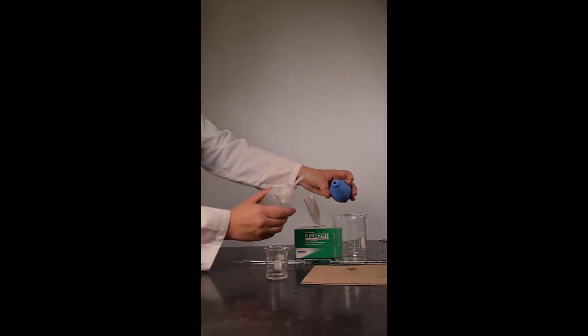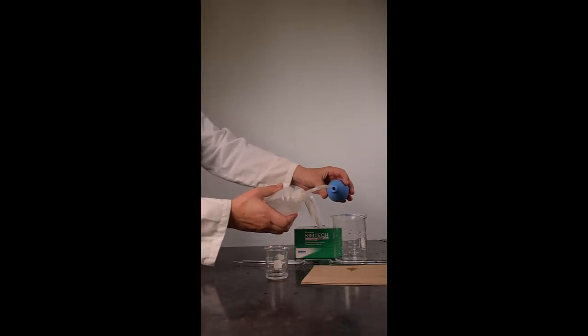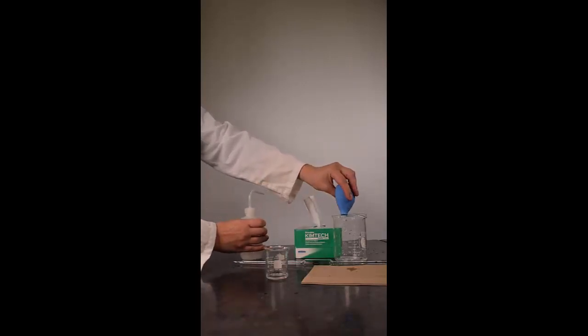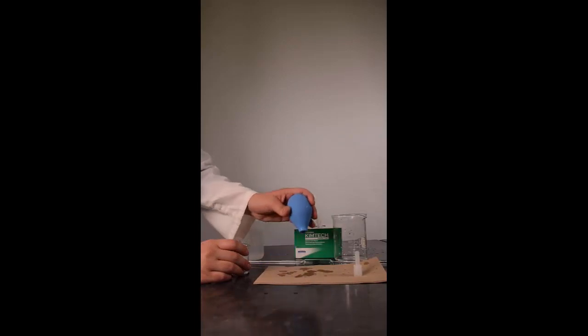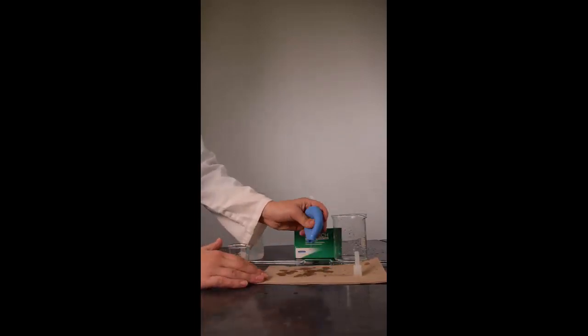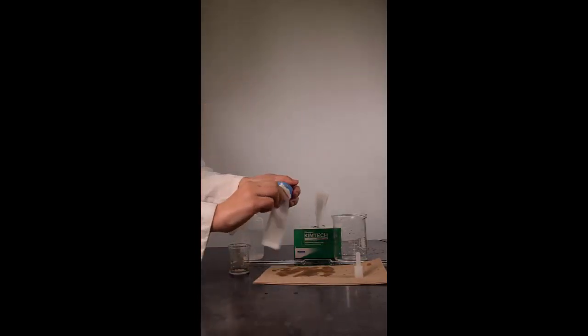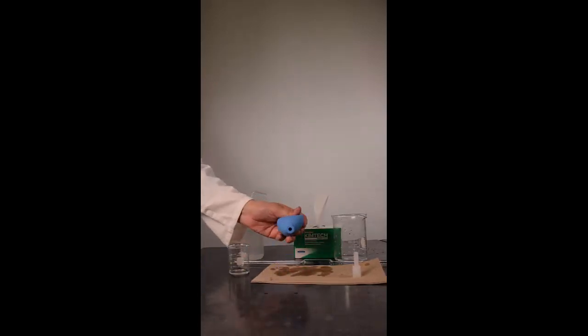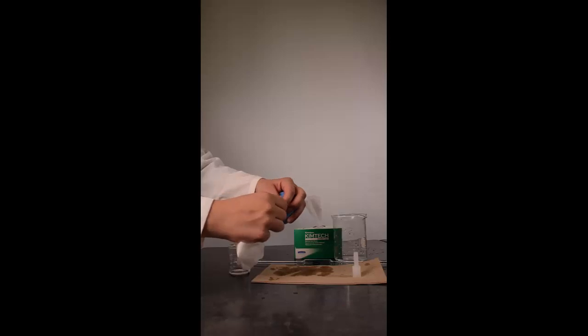Shake and squeeze the bulb to remove as much moisture as possible. Continue to squeeze and shake the bulb until no water comes out of the bulb.